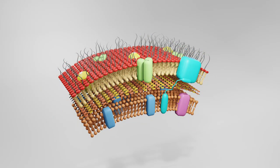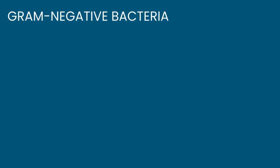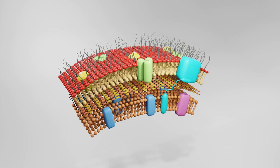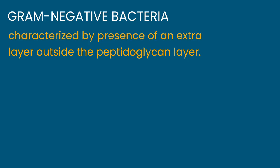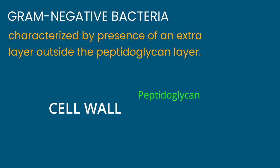This is the 3D depiction of a gram-negative bacterial cell wall. Gram-negative bacteria are characterized by the presence of an extra layer outside the peptidoglycan. Both the peptidoglycan and lipopolysaccharide (LPS), which is the outermost layer, constitute the gram-negative bacterial cell wall. The plasma membrane is not a component of the bacterial cell wall. Simplified, the cell wall is made up of two components: peptidoglycan — the major primary component distinguishing bacterial cell walls from plant cell walls (cellulose) and fungal cell walls (chitin) — and lipopolysaccharide.